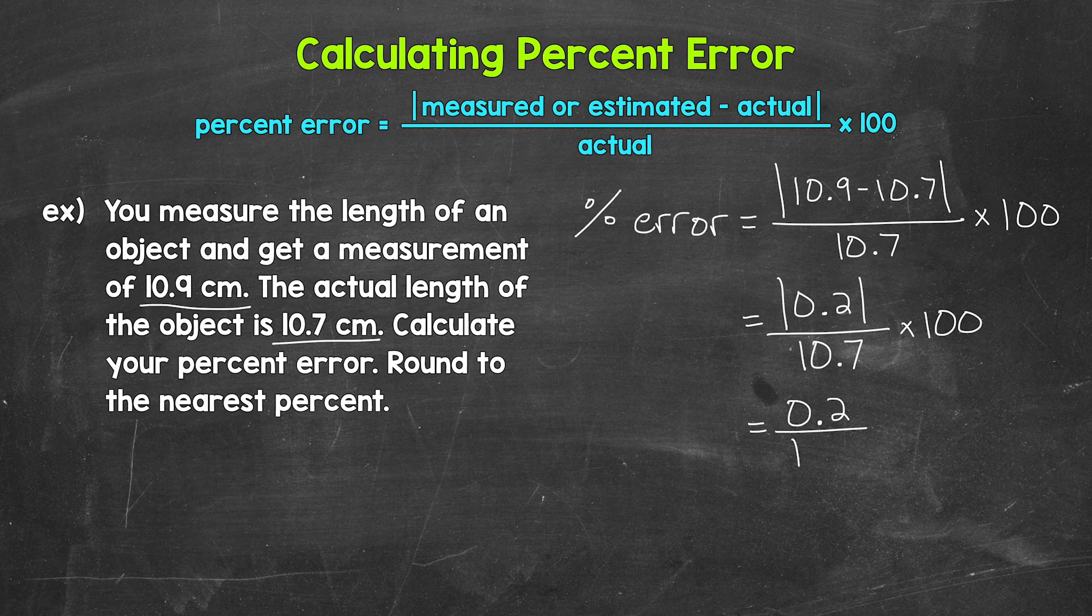Divided by the actual value times 100. And now we need to divide. So we need to do 0.2 divided by 10.7. That gives us 0.018 and that decimal continues on. So I'm going to stop there because we're going to round